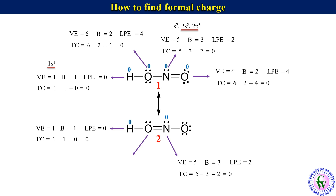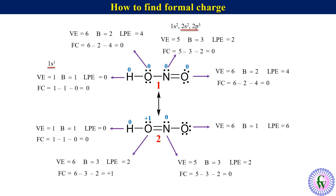For the first oxygen in structure 2: Ve = 6. There are 3 covalent bonds, so B = 3. There are 2 electrons as lone pair, so Lpe = 2. Formal charge = 6 − 3 − 2 = +1. For the second oxygen in structure 2: Ve = 6, B = 1 covalent bond, Lpe = 6. Formal charge = 6 − 1 − 6 = −1.